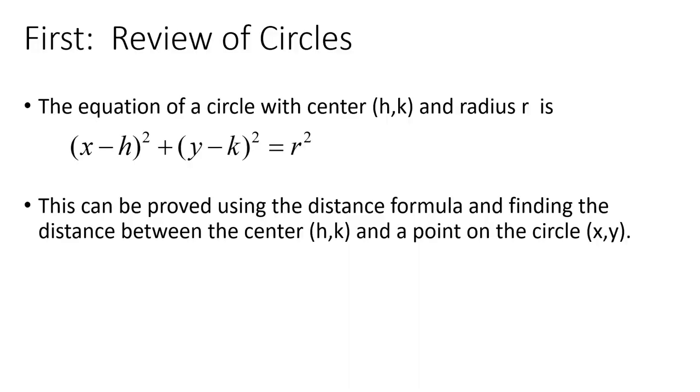So the first thing we do is start with a review of circles. How do you write the equation for a circle? It is basically the distance formula with both sides squared. H and K are the center of the circle. R is the radius. The center of the circle is HK. The point on the outside is XY. And you take the difference of the X's and square them, take the difference of the Y's and square them, equals the radius squared.